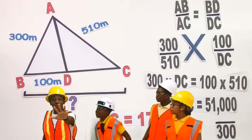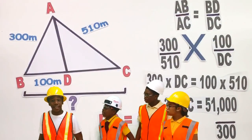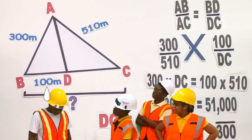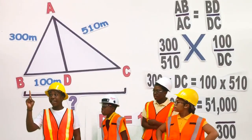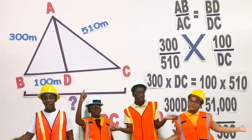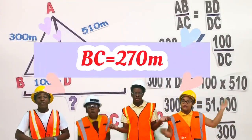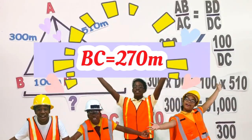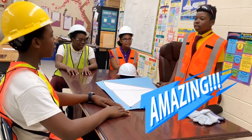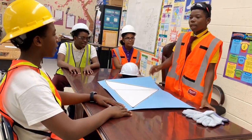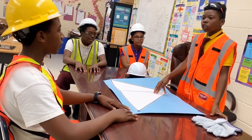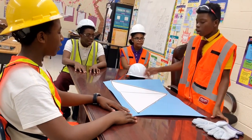But wait, we have to know side BC. Yeah, that was your side, Samantha. So side BD plus side DC is equal to 270 meters. Great job, engineers. Now that we have the complete measurements for the triangle lot, we can now plan the construction. Meeting adjourned.